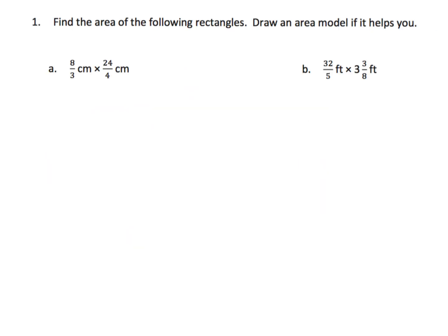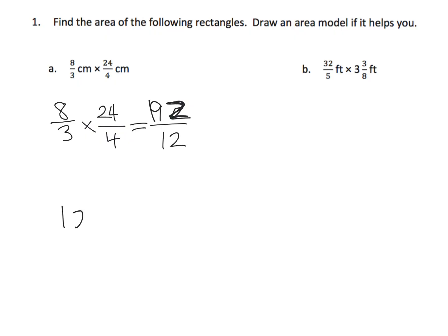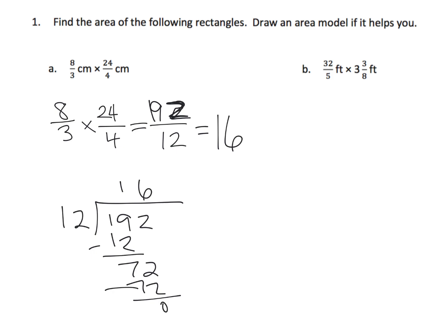Now that we understand why the algorithm works, we can go straight to it. For example: eight thirds times twenty-four fourths. Three times four gives us twelve — that tells us each whole number is made up of twelfths. Our area model is eight by twenty-four, and eight times twenty-four is 192 twelfths. Dividing 192 by 12 gives us 16 centimeters squared — a whole number answer.